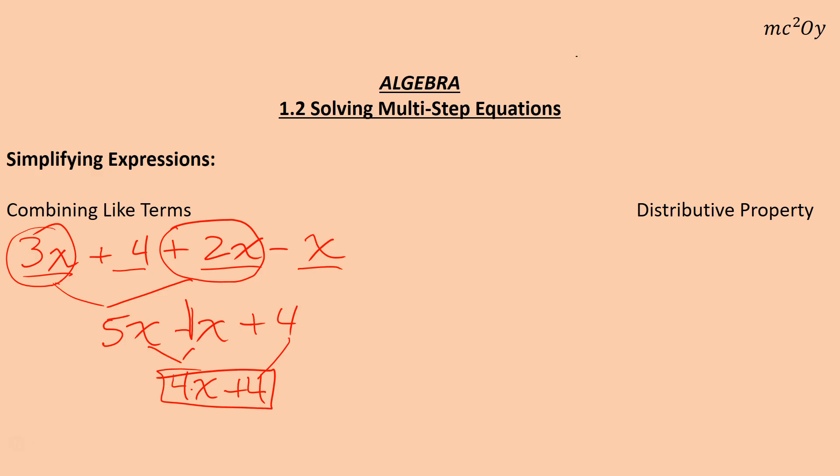Now, distributive property is a bit different. Distributive property says if I have sets of something, like a set of x plus 2's, like we're collecting x plus 2's. So x plus 2 and I have 3 of them. I have 3 sets of x plus 2. That means I have x plus 2, there's one set, plus another set of x plus 2, plus another set of x plus 2.